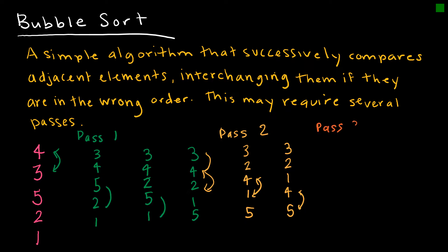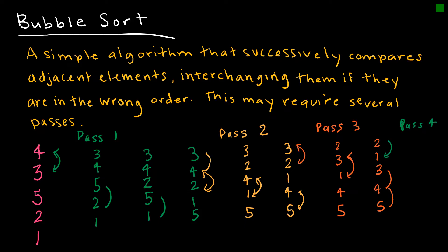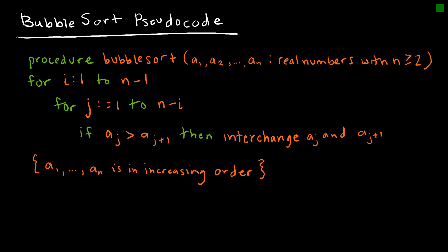That brings us to pass three. At the top, 3 and 2 are not in the right order, so now it's 2 3. Then 3 and 1 are not in the right order, giving 2 1 3. Then 3 and 4, and 4 and 5, are both in the right order. Pass four: 2 and 1 are not in the right order, giving 1 2. Then 2 and 3, 3 and 4, and 4 and 5 are all correct. It took four passes using the bubble sort — not necessarily efficient, but effective.